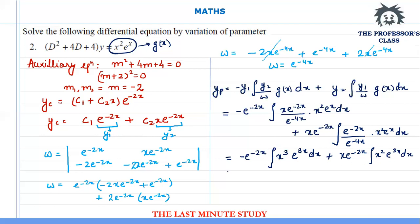Integrating these terms involves integration by parts. For e^(-2x) times the integral of x³·e^(3x): keeping x³ constant and integrating e^(3x) gives x³·e^(3x)/3. Then differentiating x³ gives 3x², and by substitution I get -3x²·e^(3x)/9.